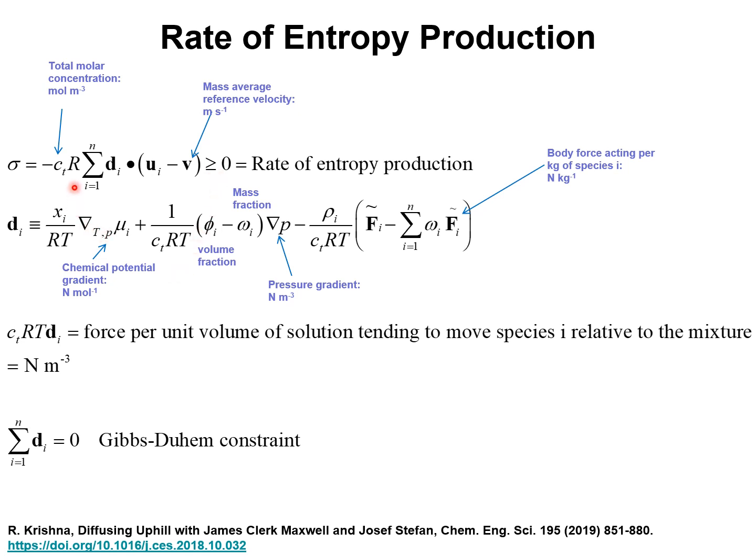The various terms in this expression are as follows. C sub T is the total molar concentration, R is the gas constant, D sub i is the generalized driving force for component i that I shall discuss shortly. U sub i is the velocity of transport of species i.